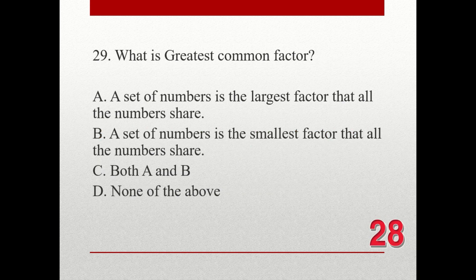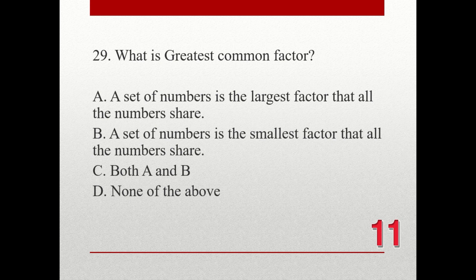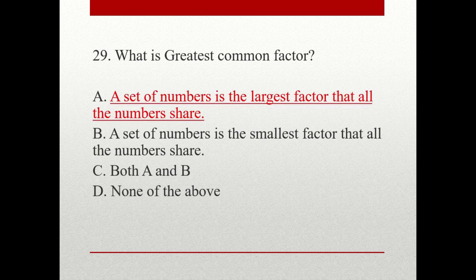Question number 29. What is the greatest common factor? A. A set of numbers is the largest factor that all the numbers share. B. A set of numbers is the smallest factor that all the numbers share. C. Both A and B. D. None of the above. The correct answer is A: a set of numbers is the largest factor that all the numbers share.